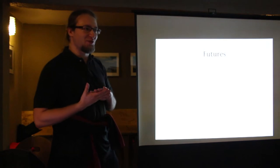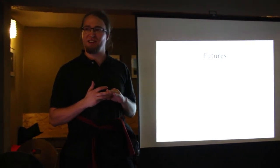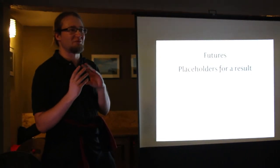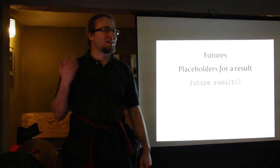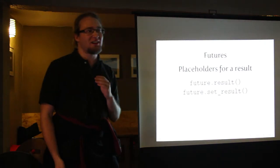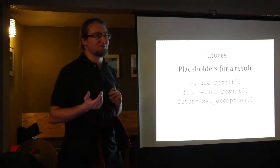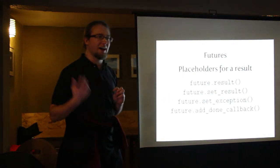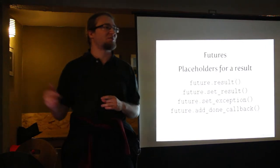Another thing AsyncIO has is futures. Futures are placeholder objects for a result that will be computed later. You can get the result with the result() method — if the future already has a result it returns it, otherwise it raises. You can set a result, which means from then on result() will return that value. You can set an exception, which means result() will raise that exception. You can also add a callback to the future, which is executed when set_result() or set_exception() is called.